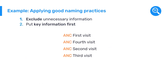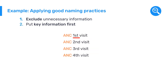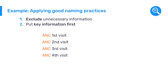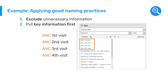However, they still won't be in the correct visit order. To ensure they are in the visit order, we can change the words first, second, third, and fourth to numerical abbreviations, so we have: ANC 1st visit, ANC 2nd visit, ANC 3rd visit, and ANC 4th visit. With this final change, the data elements will be correctly ordered from first to last and will be kept together as a group within an alphabetically ordered list.